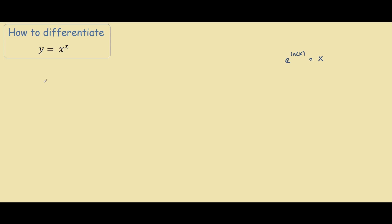So when we apply this to our equation, we have y equals e to the power of ln bracket x to the power of x.